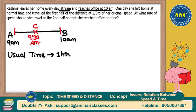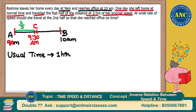Second statement: one day she left home at normal time, that is at 9 o'clock itself, and traveled the first half of the distance at two-thirds of her original speed. That means for the first half of the distance she is not traveling at regular speed — she is traveling at two-thirds of her original speed.